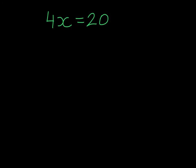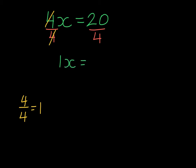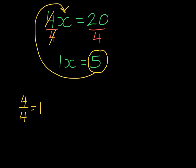Here's our next example, and we can see that X is being multiplied by 4. The inverse of this is to divide by 4 on both sides. Remember, if we have 4 divided by 4, that will give us 1. So on the left-hand side, we're left with 1X. On the right-hand side, 20 divided by 4 is 5. At this point, we can take 5, substitute it into our original equation, and see if 4 times 5 gives me 20 — and we see that it does, so we've solved it correctly.